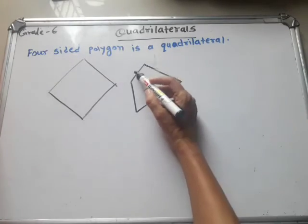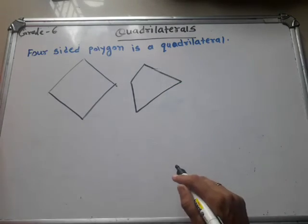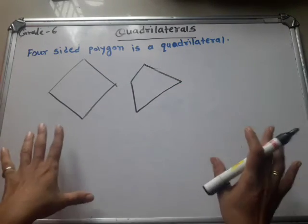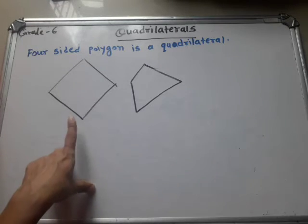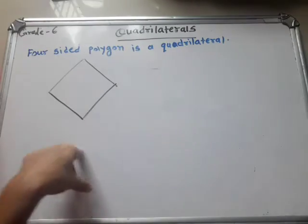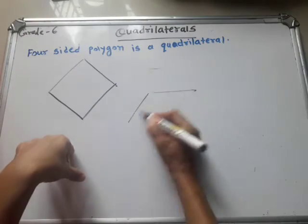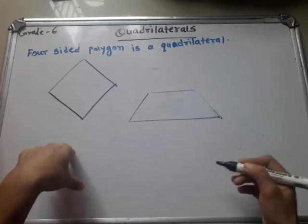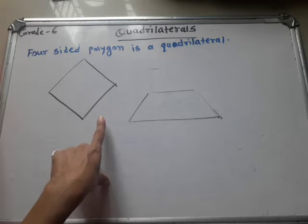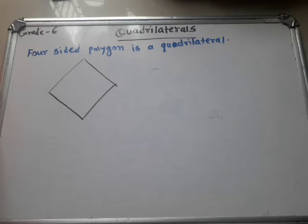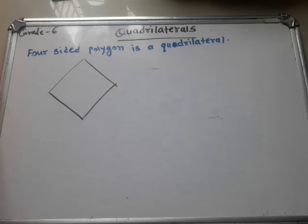Because here are how many sides? One, two, three, four — four sides. So you can draw any shape using four line segments; it is called a quadrilateral. This is again a quadrilateral — see here, one, two, three, and four. This shape we again call a quadrilateral. So a four-sided polygon is called a quadrilateral. A quadrilateral has four sides and four corners.